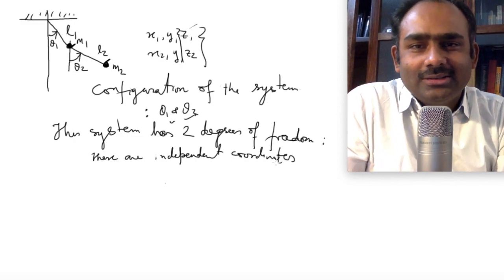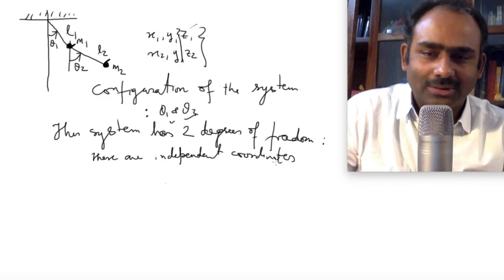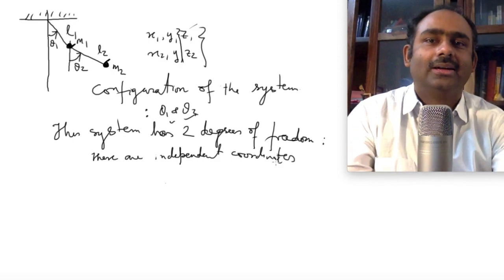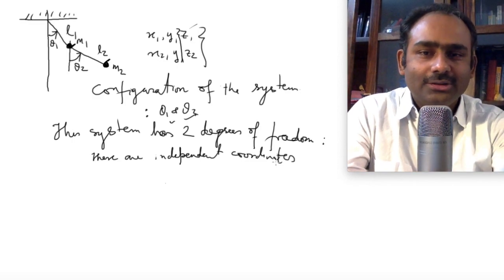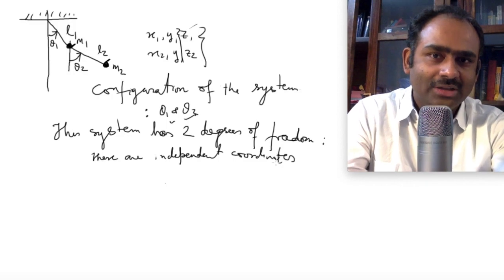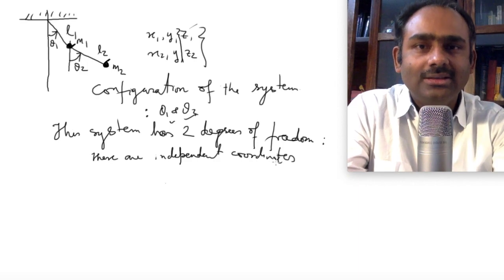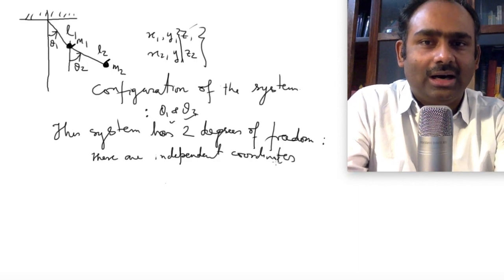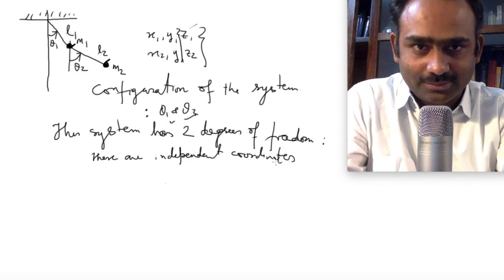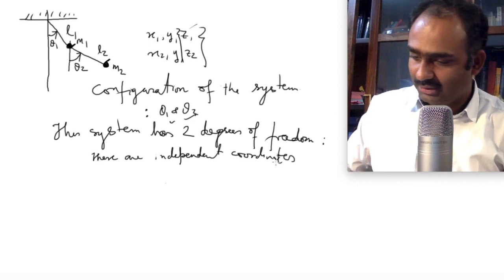So what we say is that this system has two degrees of freedom — two, because two numbers are sufficient, and these are the independent coordinates. You may say you don't want to use theta1 and theta2 but some other combination — that is fine, but it will not change the fact that you still need only two independent quantities. The minimum number is 2, and that is what is called the degrees of freedom of this system, or any system you are looking at.